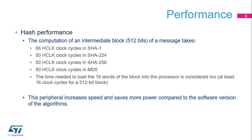These are the times it takes to process a single block of data depending on the chosen algorithms. HCLK is the CPU clock and can go as high as 216 MHz. Note that the main benefit of using a hardware accelerator is to increase speed and save power compared to a full software implementation of the hash functions.